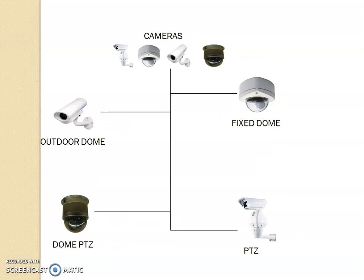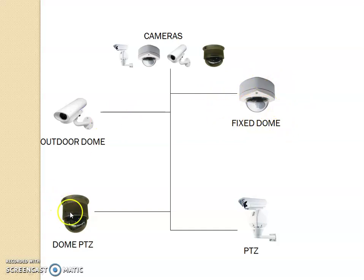Coming to camera — there are a wide range of cameras available for CCTV systems, including outdoor domes and indoor cameras. In outdoor domes, you can see equipment fixed under the surface of a wall or sometimes in the ceiling. There are also fixed dome cameras and devices called PTZ, which stands for pan, tilt and zoom.